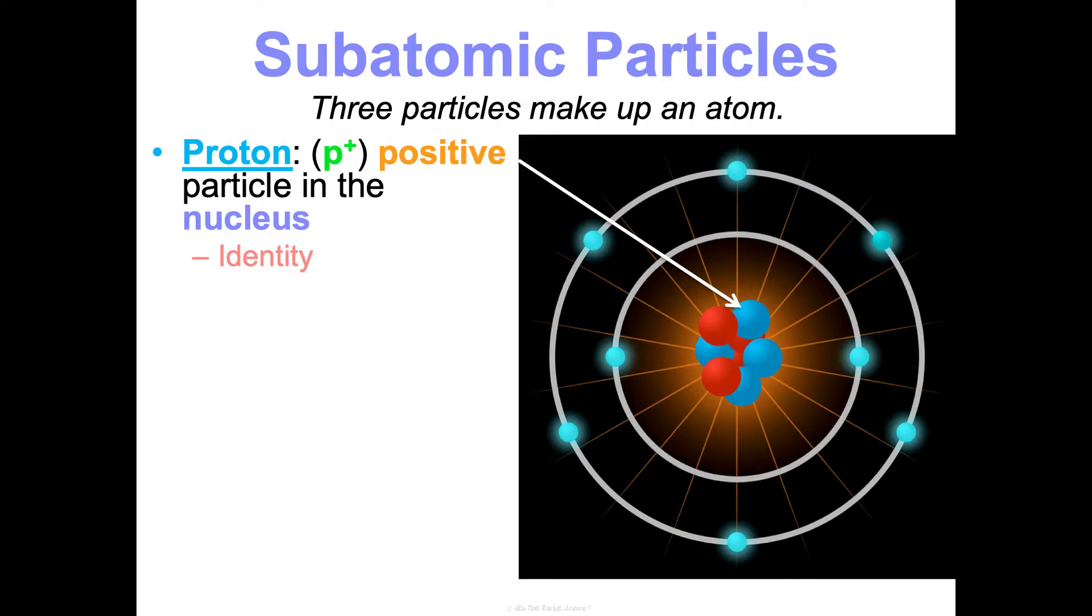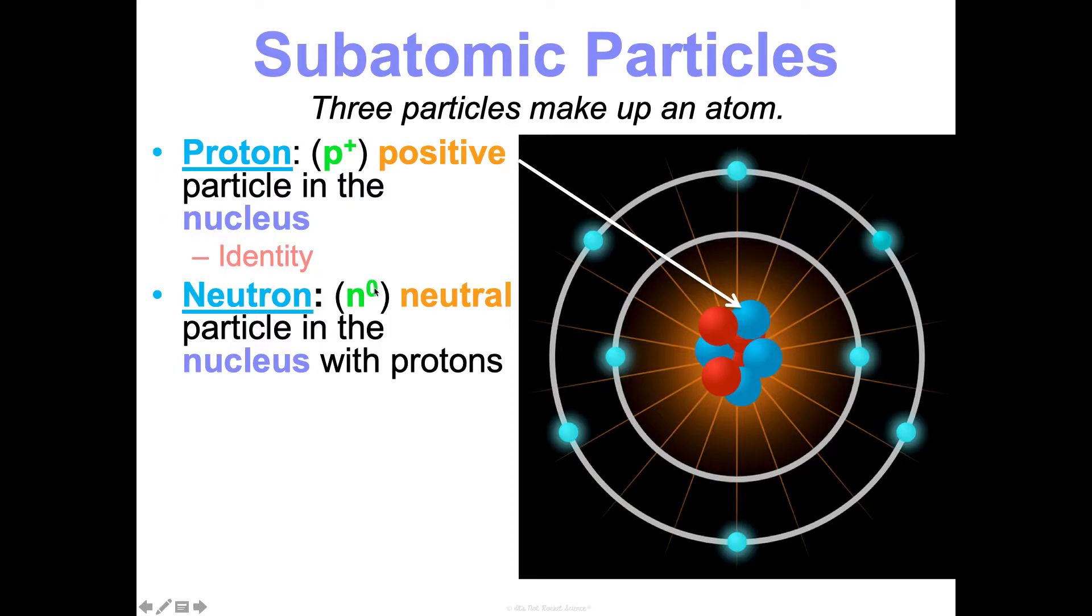Another subatomic particle is the neutron. And its symbol is N with a zero because it has no charge. It is neutral. It is not positive or negative, and it is also in the nucleus with protons. What the neutron tells us about an atom is it really informs us on the atom's mass. Because atoms of the same element, so two different carbon atoms, can have different masses based on the number of neutrons that they have. Their proton number isn't changing because the proton is what makes them carbon. But their mass can be different based on how many neutrons they have. And that's something we'll get into a little bit later. Those are called isotopes.